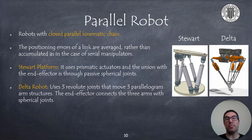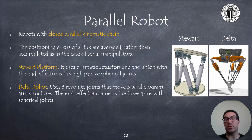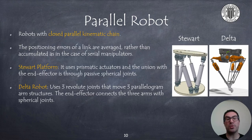When talking about parallel robots, we can distinguish two types: the Stewart platform and the delta robot. For the Stewart platform, six prismatic actuators are used to move the end effector. Joints are spherical joints and these types of platforms can be frequently found in driving or flight simulators. On the other hand, a delta robot uses three revolute joints to move three parallelogram arm structures attached to an end effector using spherical joints.